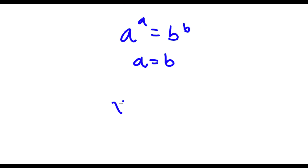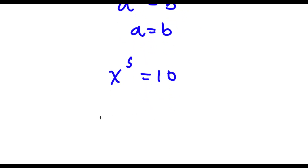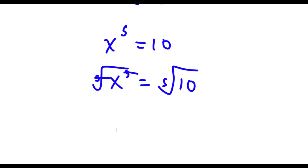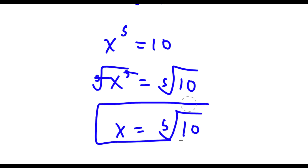So in this case x to the power of 5 is equal to 10. Now I'm going to take the fifth root on both sides. These two cancel out and I'm left with x is equal to the fifth root of 10. So this is my answer.